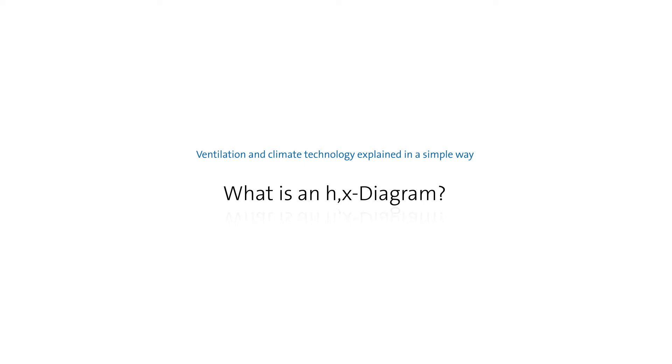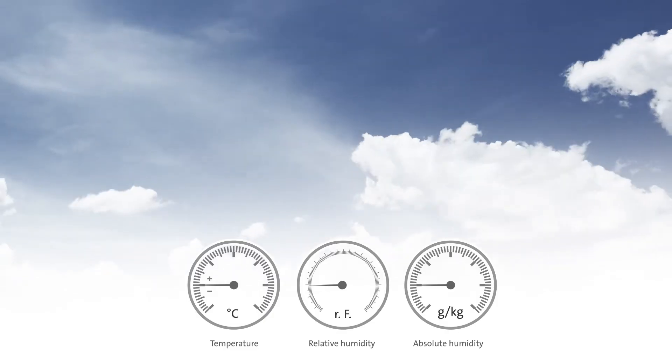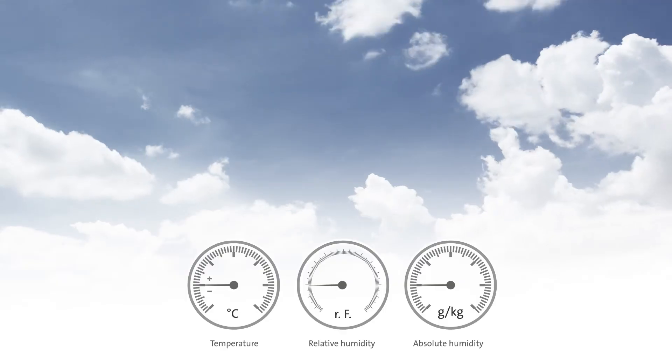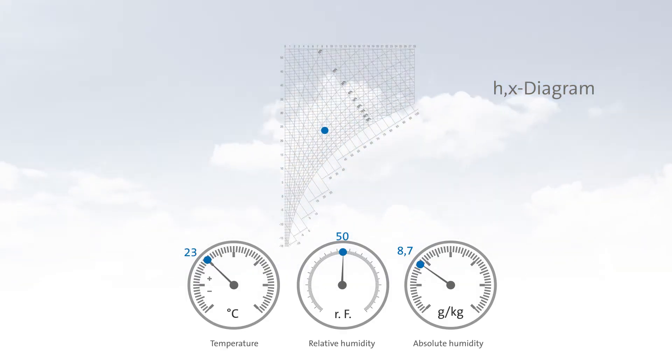What is an HX diagram? An HX diagram is an ideal tool for calculating air conditions as well as changes in air conditions. An HX diagram can be used to depict any air condition, and any change to air conditions can therefore be clearly illustrated.